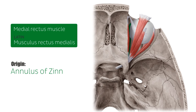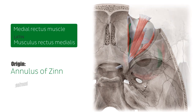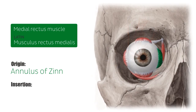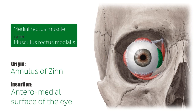The annulus of Zinn is formed by the tendons of the four rectus muscles — medial, lateral, superior, and inferior. The medial rectus muscle inserts onto the anteromedial surface of the eye.